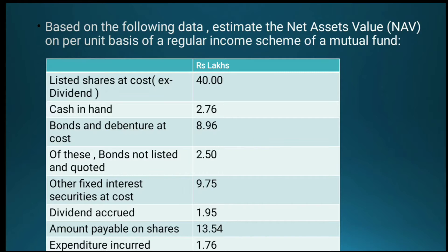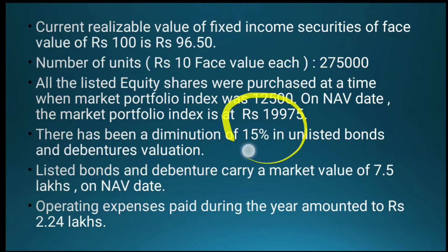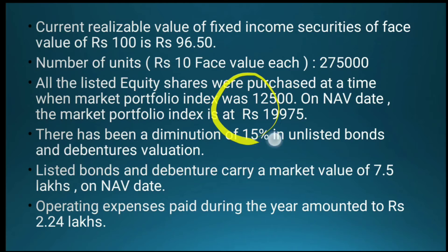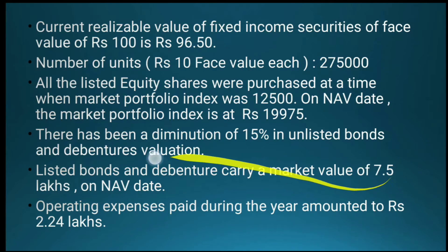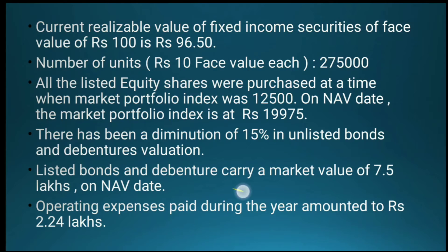There has been a diminution of 15% in unlisted bonds, so from the unlisted bonds value of 2.5 lakhs we need to deduct 15%. Listed bonds and debentures' market value is given as-is at 7.5 lakhs. Operating expenses paid during the year: 2.24 lakhs.